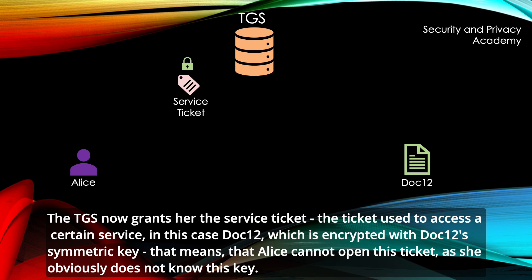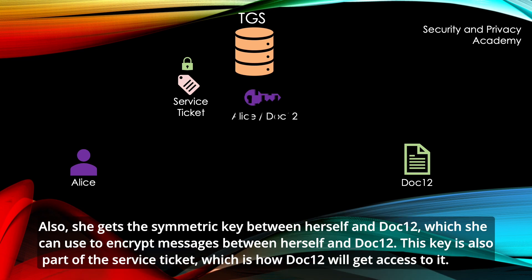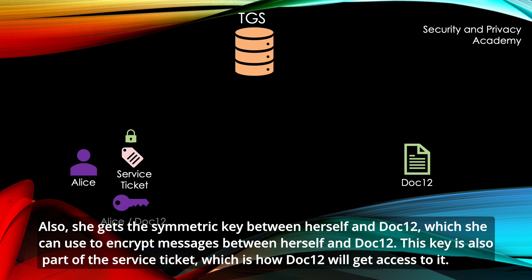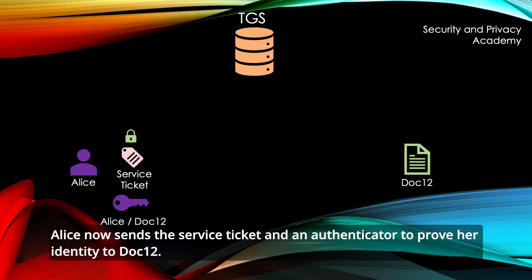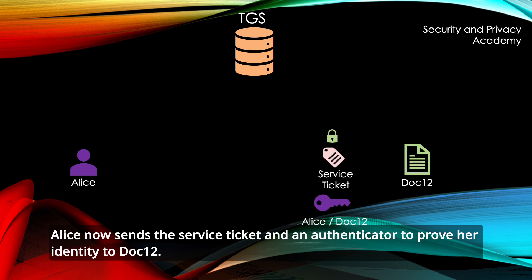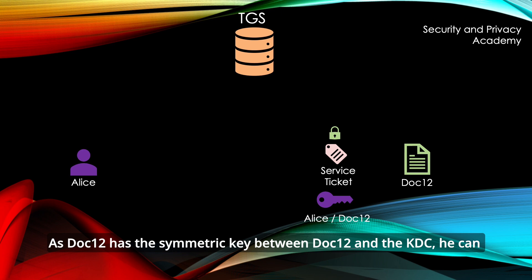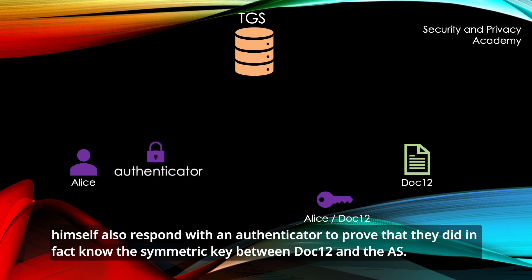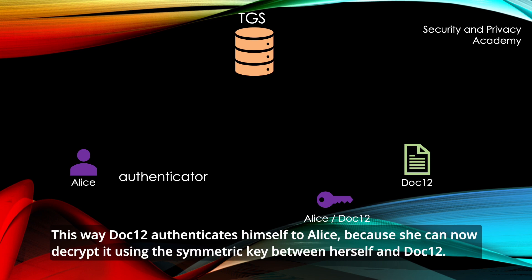That means Alice cannot open this ticket, as she obviously doesn't know the key. Also, she gets the symmetric key between herself and DOC12, which she can use to encrypt messages between herself and DOC12. This key is also part of the service ticket, which is how DOC12 will get access to it. Alice now sends the service ticket and an authenticator to prove her identity to DOC12. As DOC12 has the symmetric key between DOC12 and the KDC, it can decrypt the ticket, derive the symmetric key between Alice and DOC12, and can itself also respond with an authenticator to prove that it knows the symmetric key between DOC12 and the AS. This way DOC12 authenticates itself to Alice, because she can now decrypt it using the symmetric key between herself and DOC12.